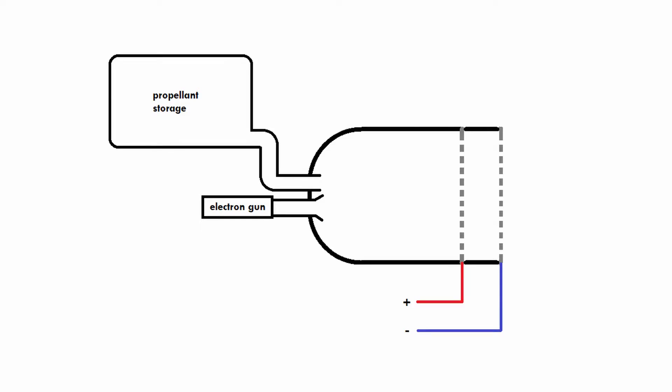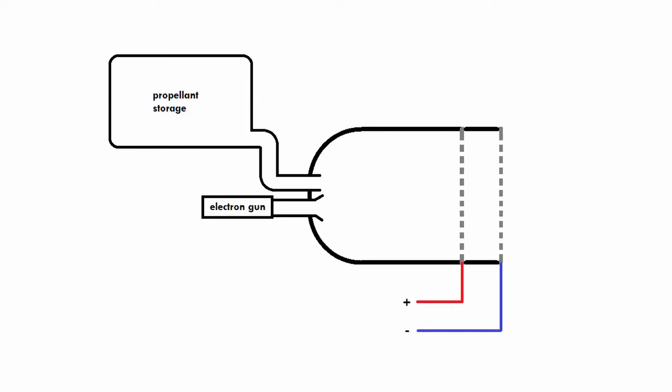Here's a schematic drawing that I've made of an ion thruster. It all starts off in some sort of propellant storage tank — a container filled with some sort of gas, because an ion thruster uses gas as the propellant. That gas will then flow through a pipe into the actual ion thruster.